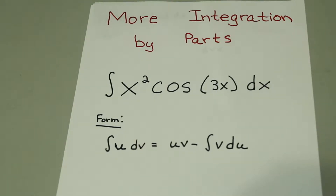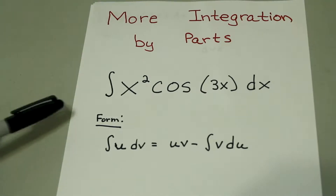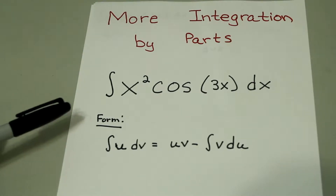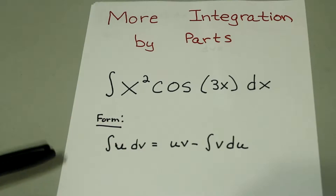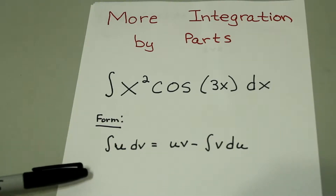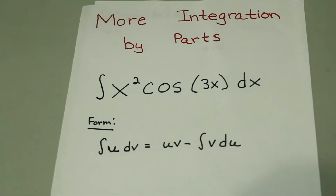Hey guys, in this video we'll be working with a bit more complex problem for integration by parts. In a previous video I went over the basics of integration by parts, so if you haven't watched that, the link will be in the description below. For this video, we'll be working with the integral of x squared times cosine of 3x dx. The form for integration by parts is: integral of u dv equals uv minus integral of v du. So let's get started.